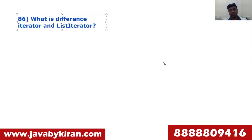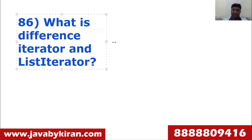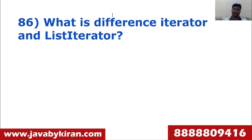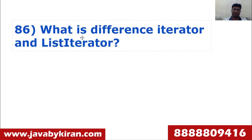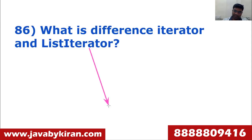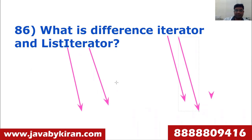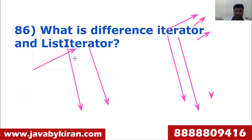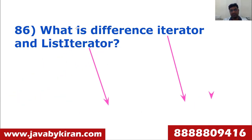What is the difference between Iterator and ListIterator? Both are interfaces used for iterating a list and other collections. ListIterator is a sub-interface of Iterator and has more features. With Iterator, you can only go forward using next(). With ListIterator, you have both next() and previous(), allowing bidirectional traversal.